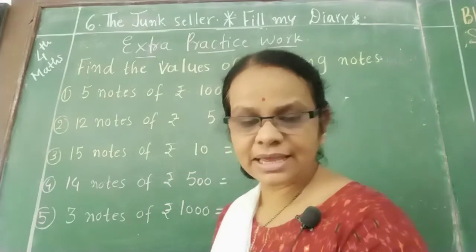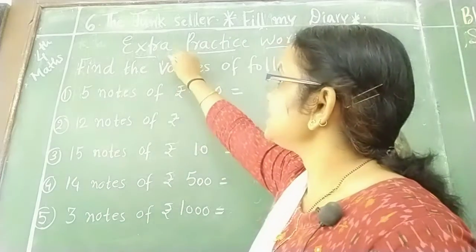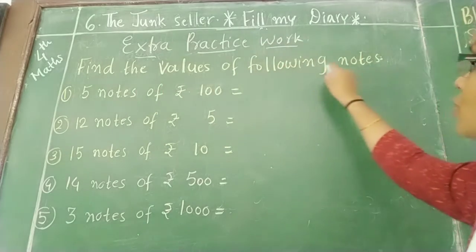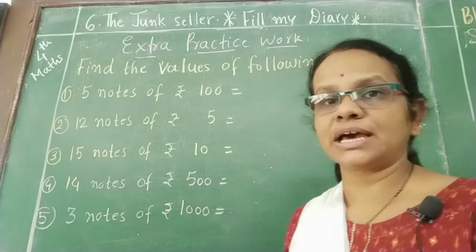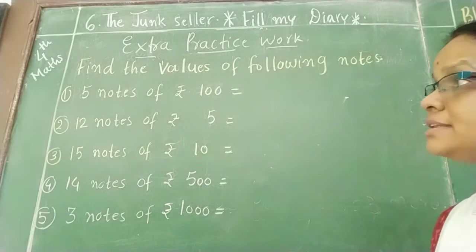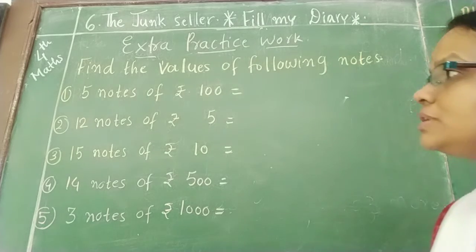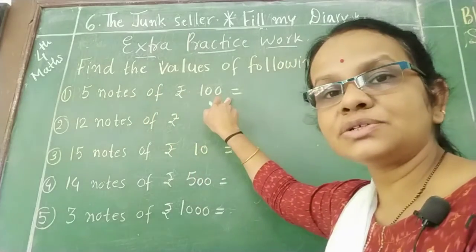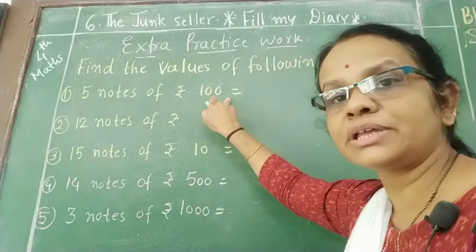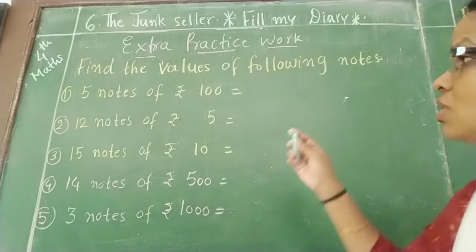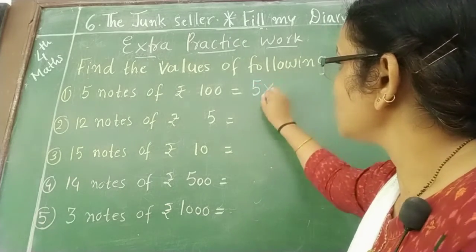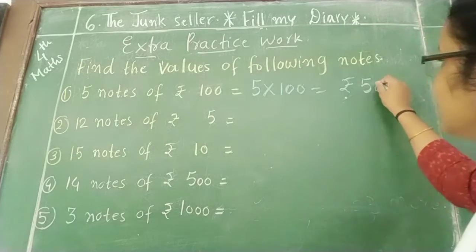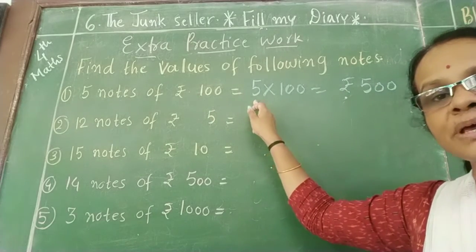Now see the extra one — another extra practice work. Find the values of the following notes. The first one: 5 notes of rupees 100 — that is rupees 500. This is the value of 5 notes of rupees 100. Then, 12 notes of rupees 5 — 12 fives are 60 — so rupees 60.